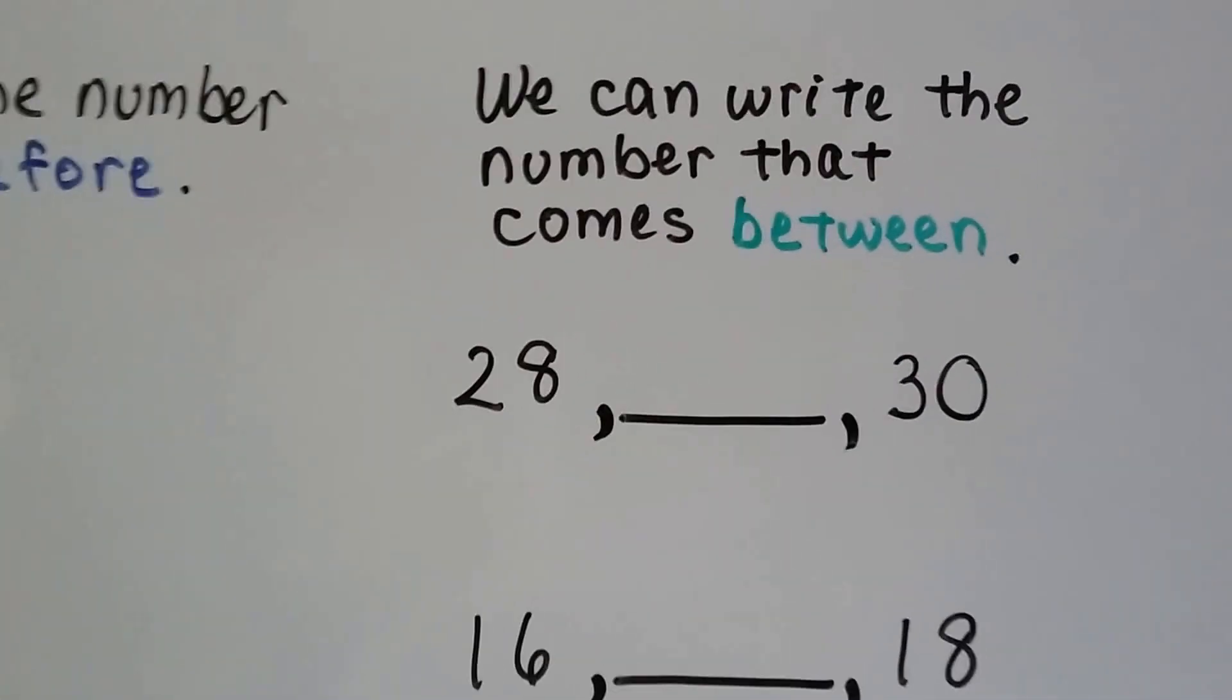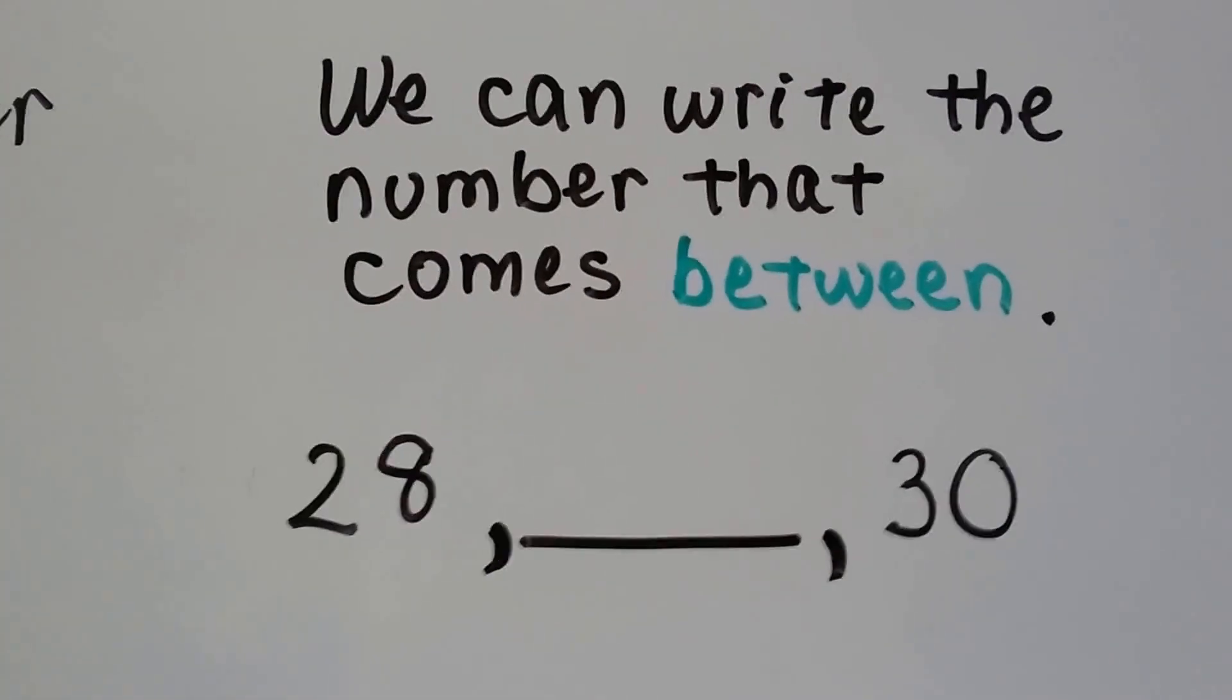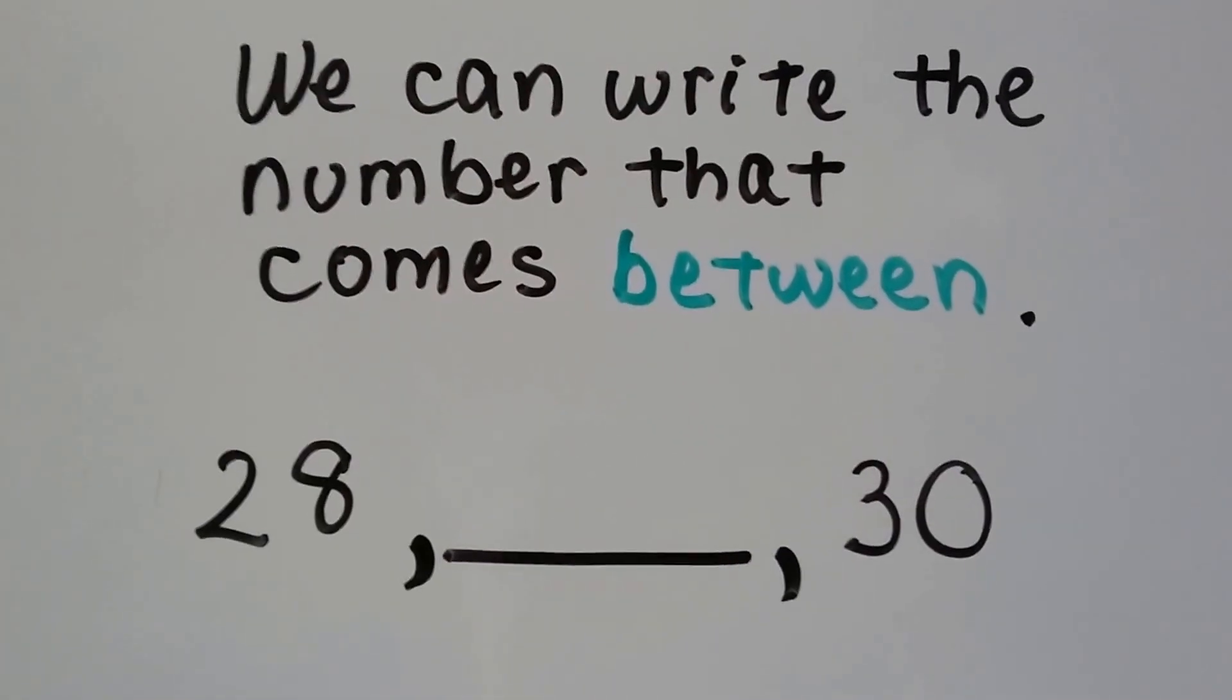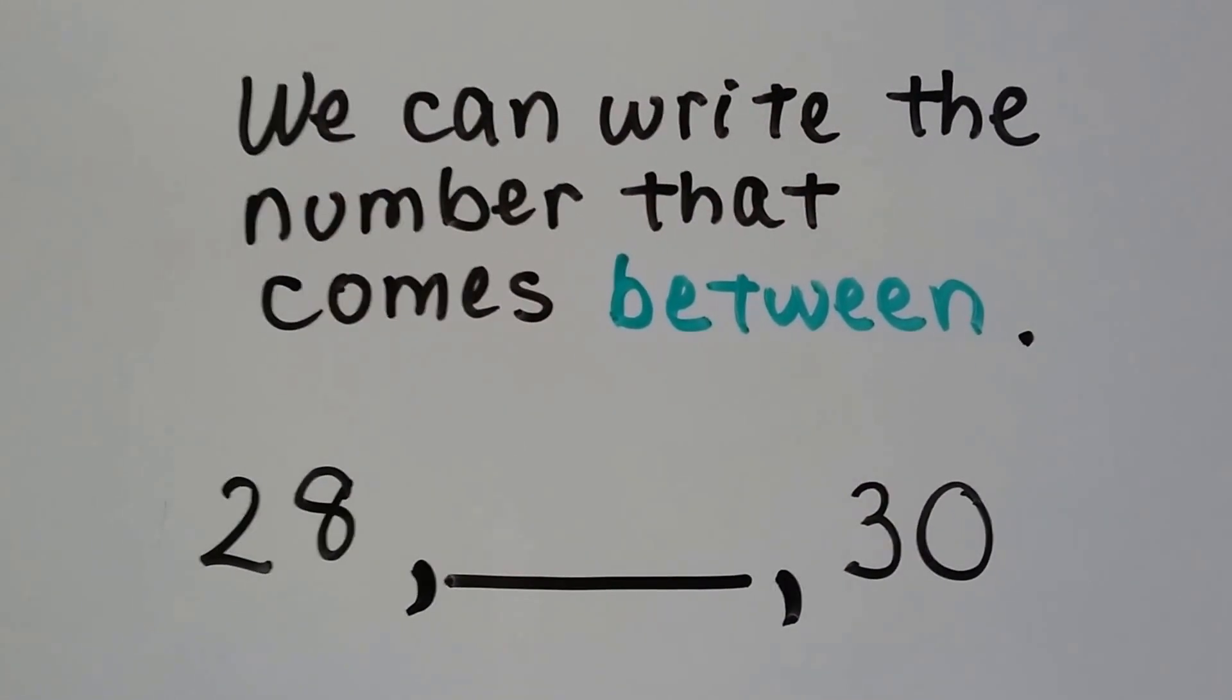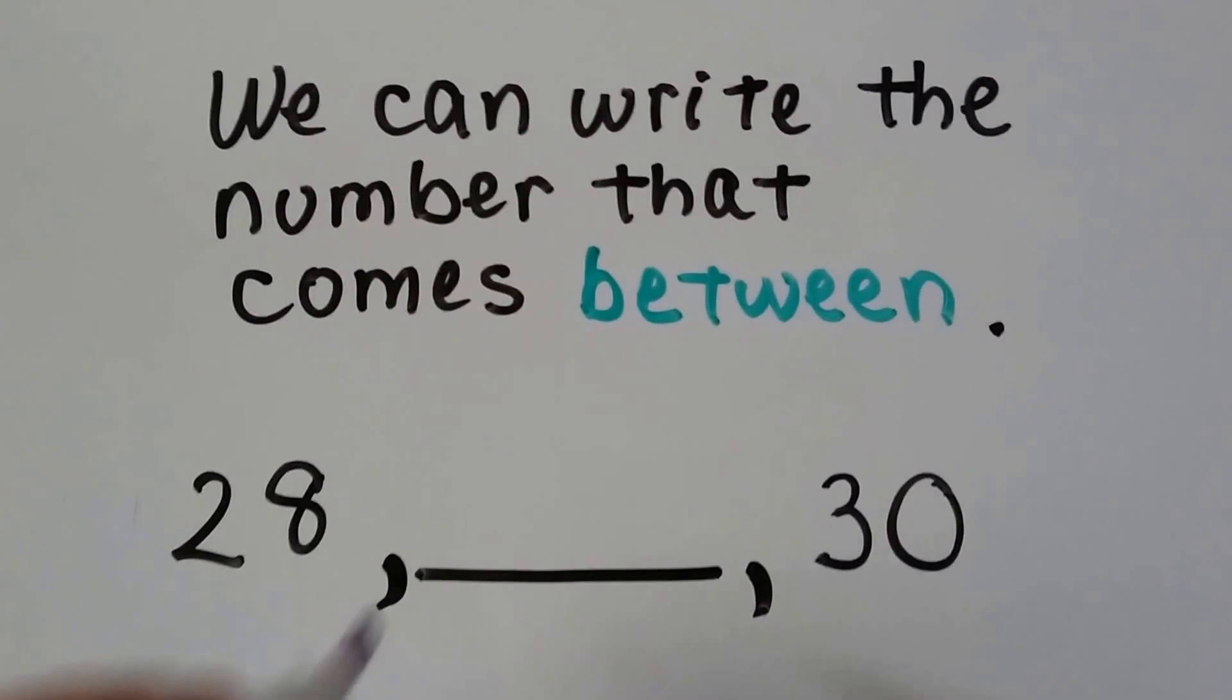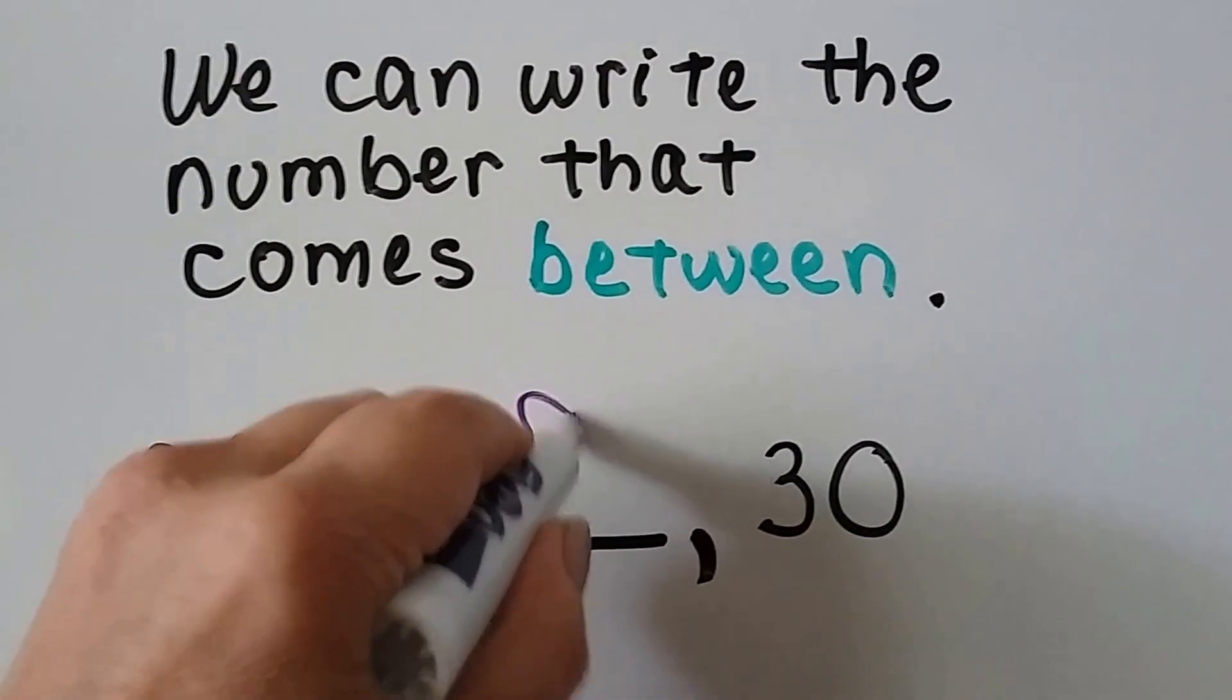Now we can also write the number that comes between. When we count, what comes between 28 and 30? When we count, we say 28, 29, 30.